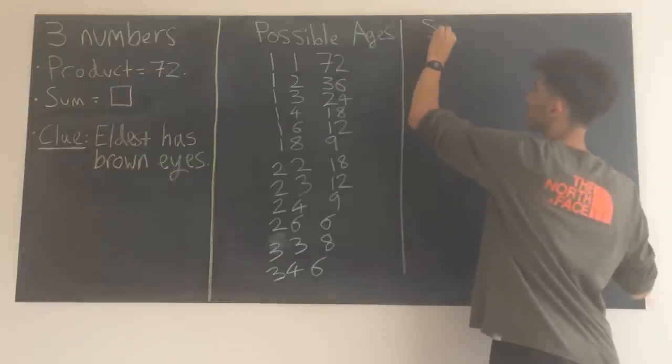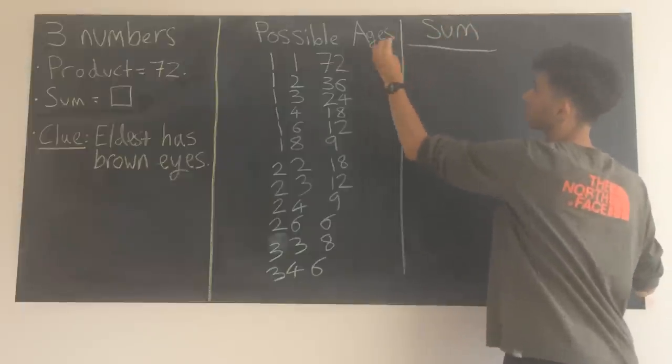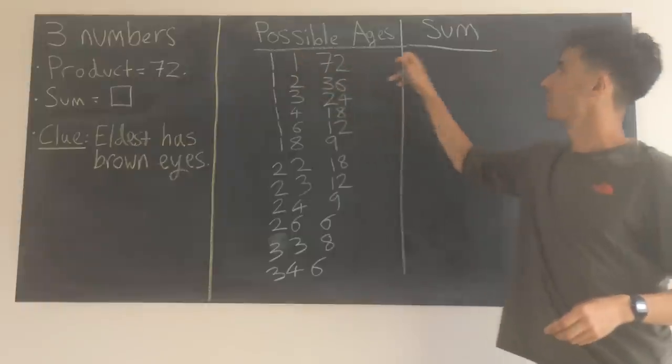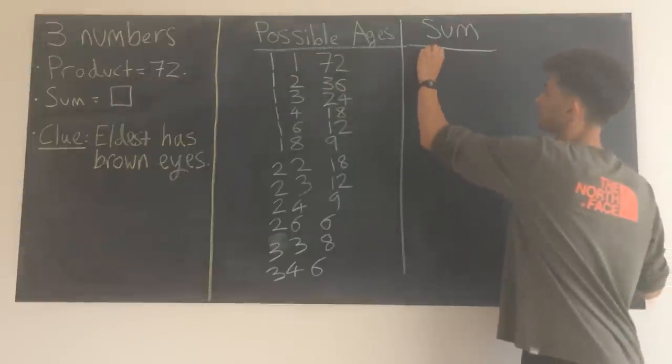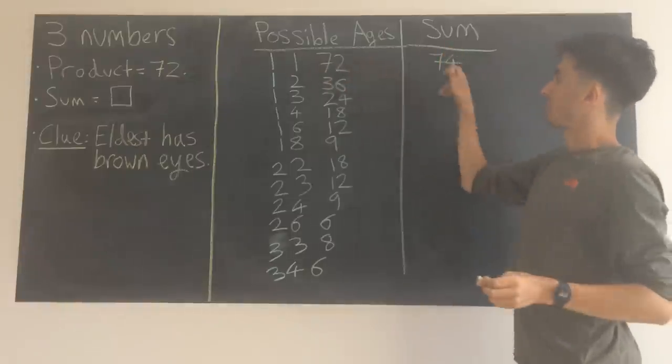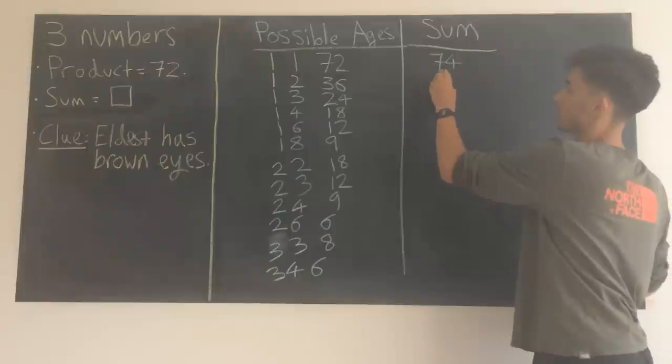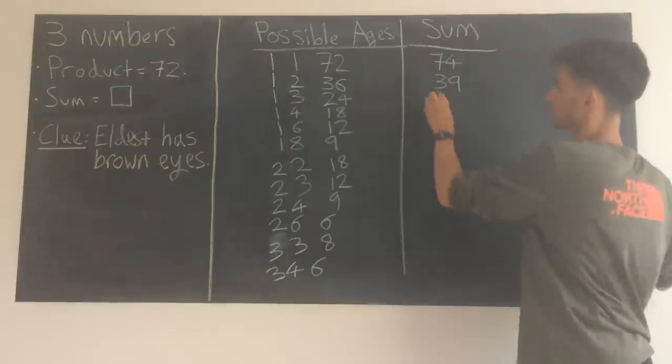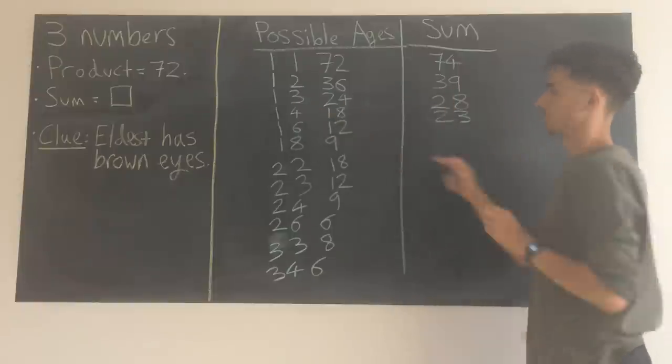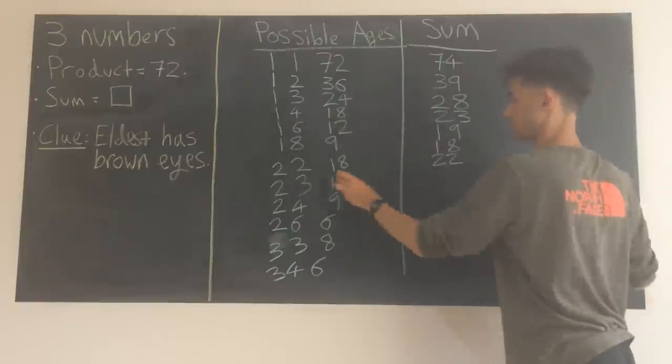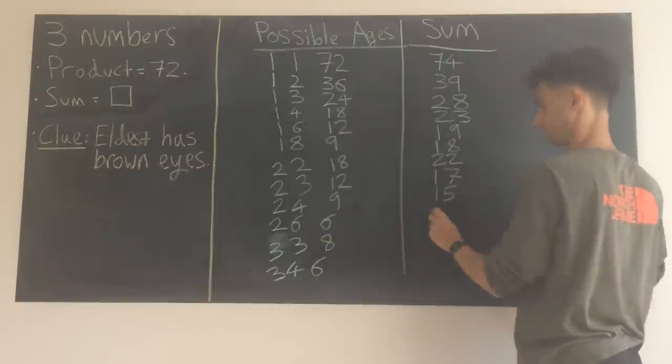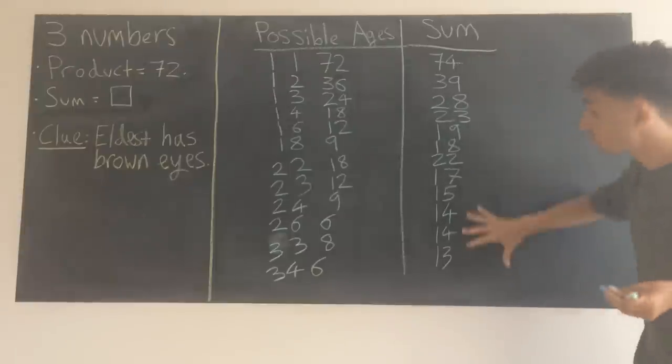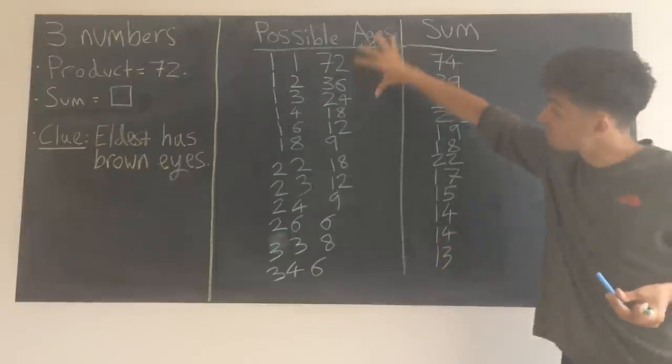So for each row, all we need to do is add up the 3 numbers and look at their total. So the top row definitely adds to 74. 39 for our next one. I might fast forward on this bit, because it's a bit boring. OK, we've now got all of the sums of each of these possible combinations.